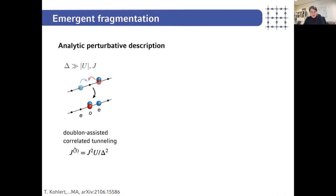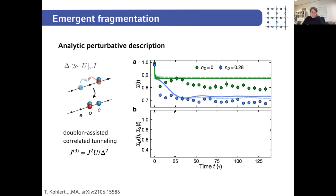Going back to the T3 term, which is the dominant microscopic process: the characteristic timescale is given by J3, which scales inverse with delta squared. Of course, if we want to establish the tilted Fermi-Hubbard model as a platform to study fragmentation, this timescale must be reasonable — we cannot simply send the tilt energy to infinity because nothing will happen on the timescale of our experiment and we would be dominated by technical noise or atom loss. We work at delta over J on the order of eight.